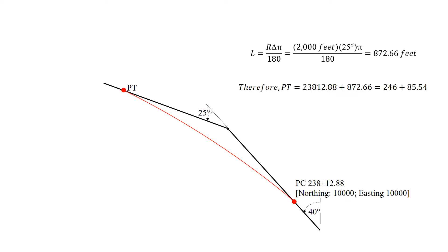The PT is 238 plus 12.88, that's our PC, plus the length of the curve 872.66, gives us a station of the PT of 246 plus 85.54. Now we know our point of interest is beyond the curve, which simplifies how we can approach this problem.